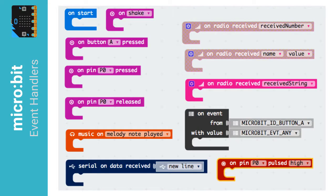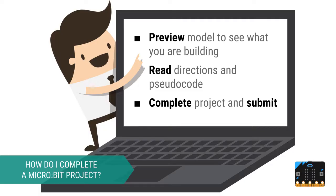Here's a quick look at some of the event handler blocks you can explore as you continue your MicroBit adventure. Now I'm going to walk you through how to complete a MicroBit assignment. Although each project is unique, the same general steps apply. First, preview any models I provide so you know what you are building. Then read the directions completely and review any provided pseudocode, both written and visual. Lastly, complete the project to the best of your ability and submit according to the specific directions that I provide.